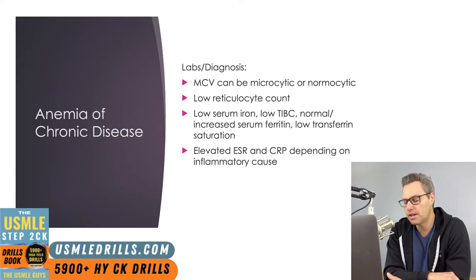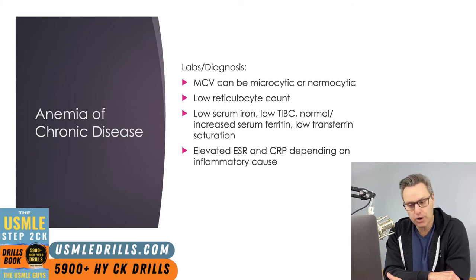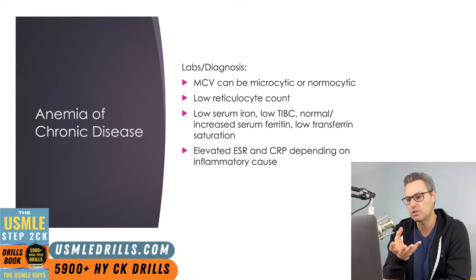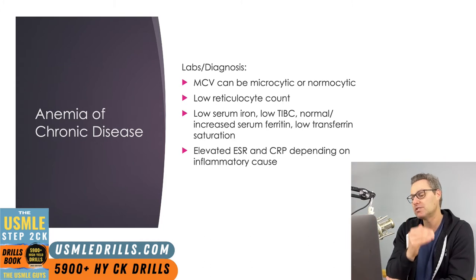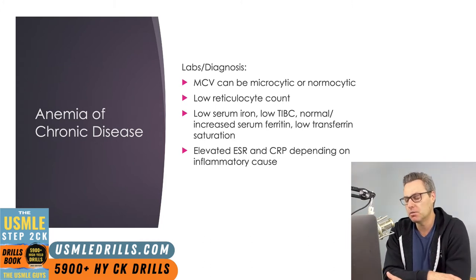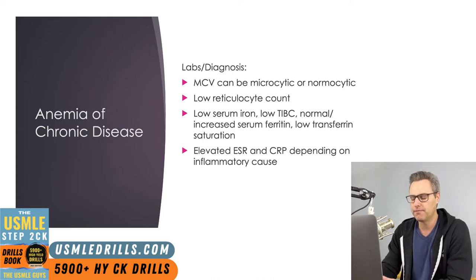Elevated ESR and CRP can also be seen depending on the inflammatory cause. If ESR or CRP are elevated, this indicates some sort of inflammatory process, which should move anemia of chronic disease higher on your differential and push iron deficiency a bit lower, since iron deficiency is not associated with an inflammatory state.